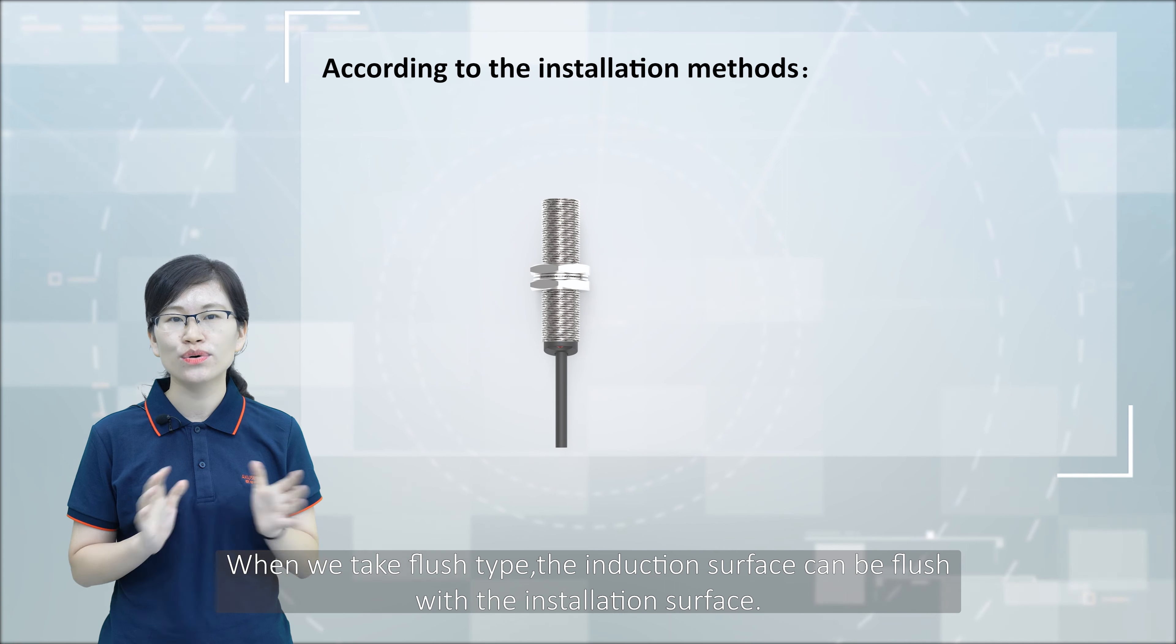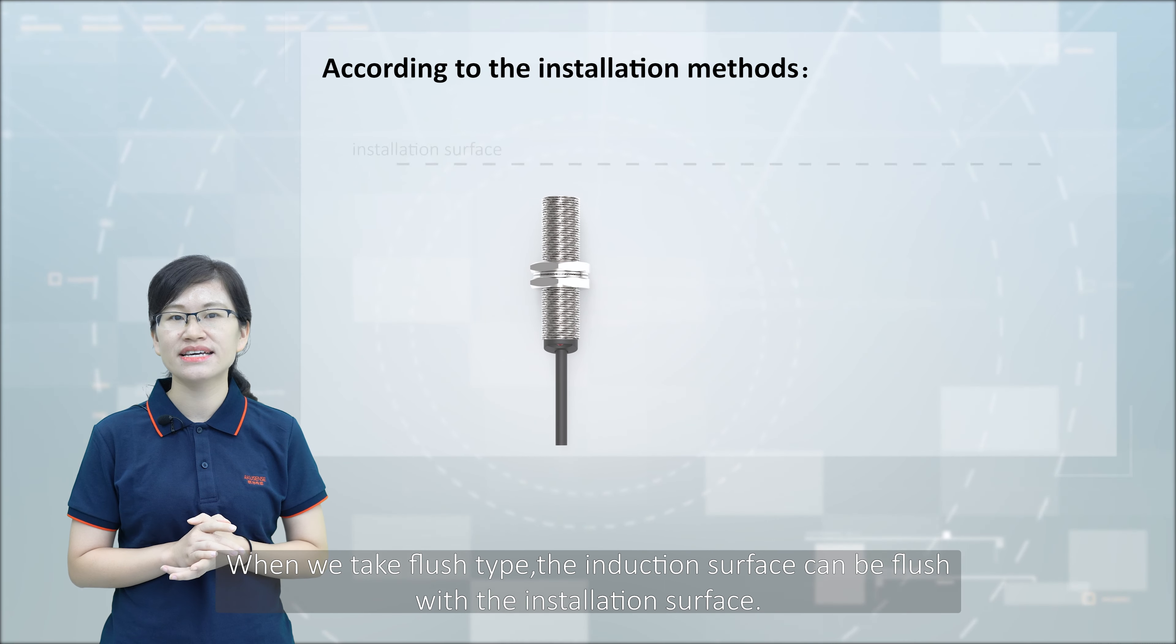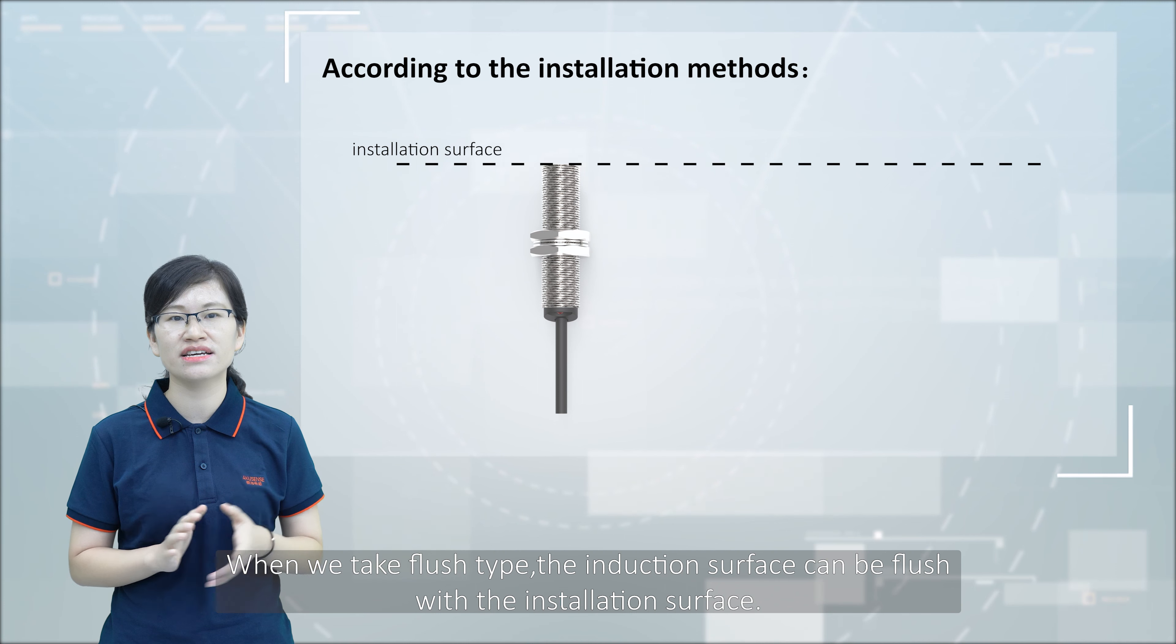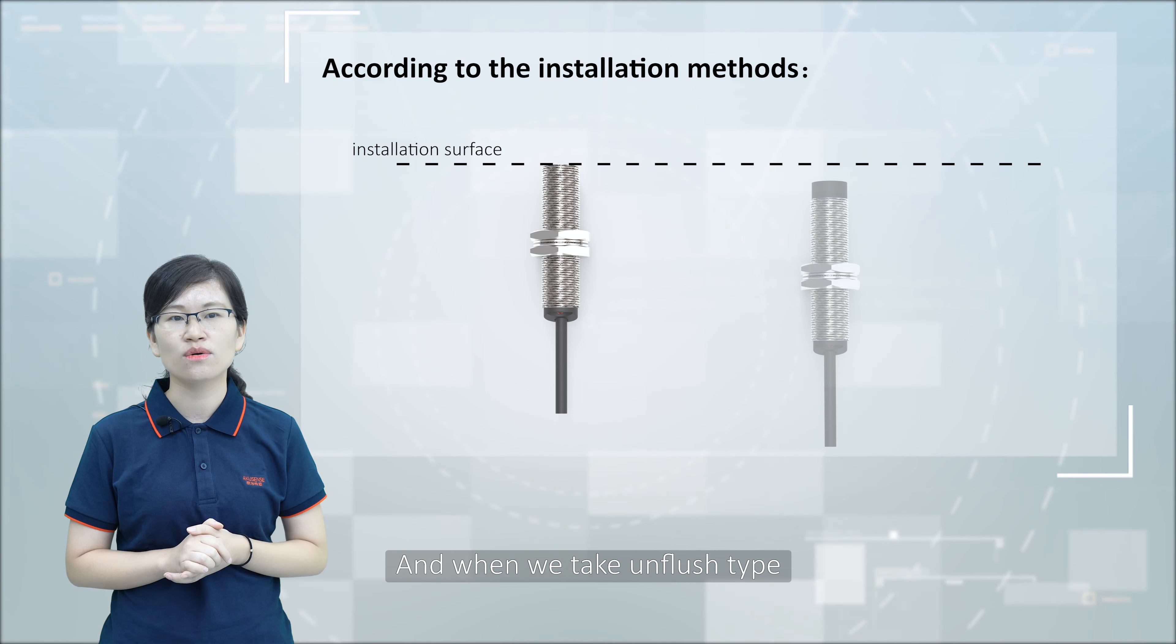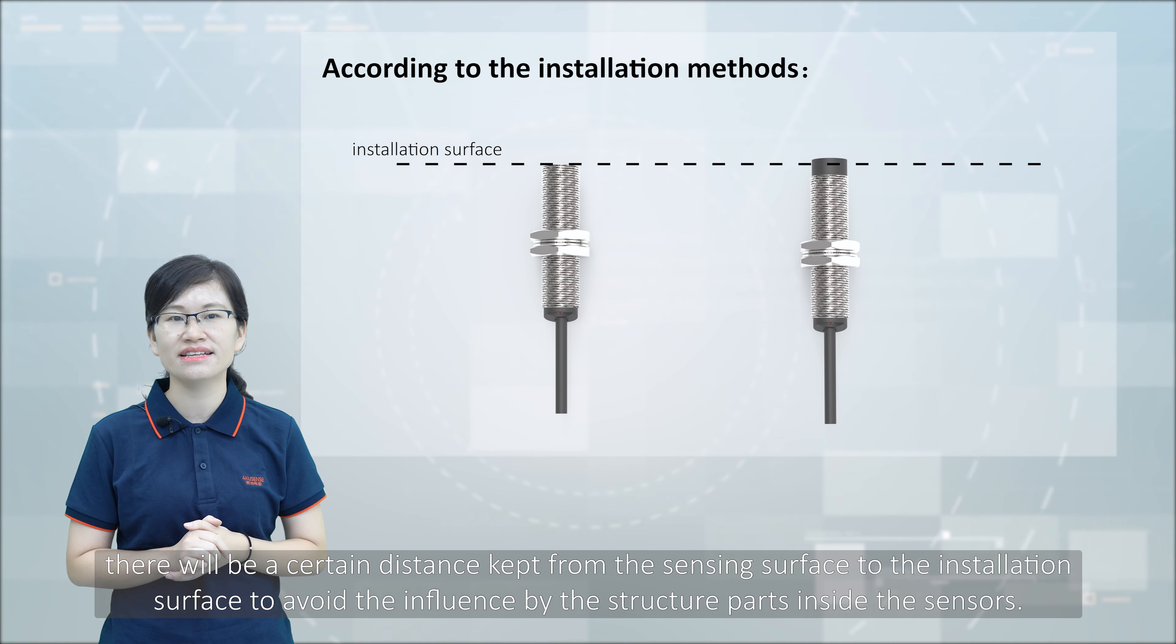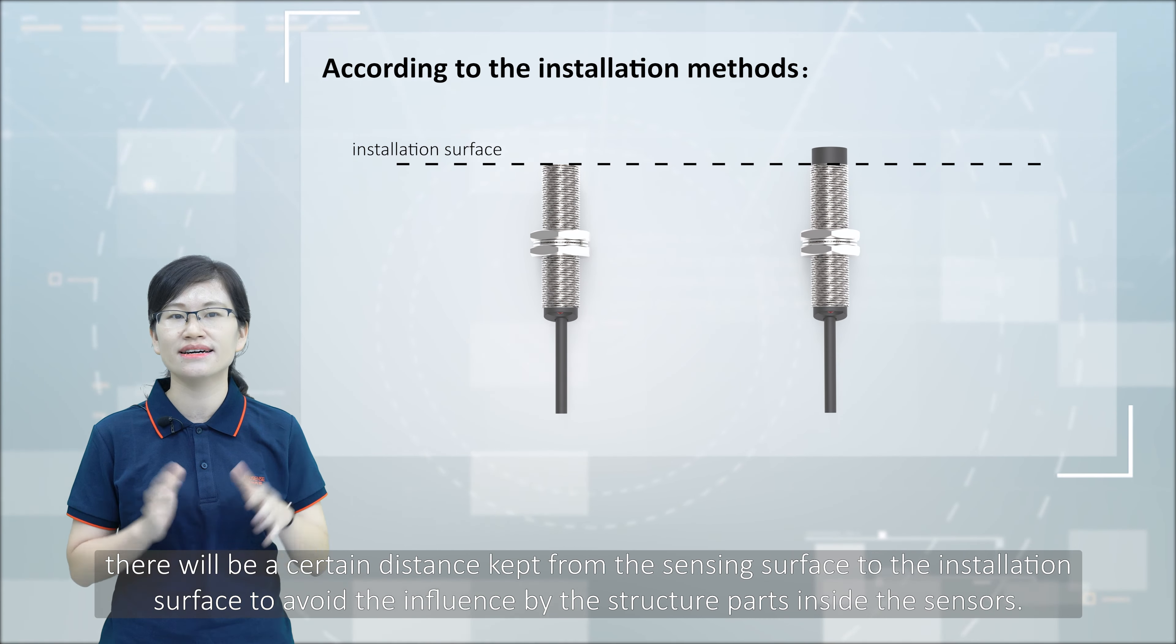When we take a flush type, the induction surface can be flush with the installation surface. When we take an unflush type, there will be a certain distance kept from the sensing surface to the installation surface to avoid the influence by the structure parts inside the sensors.